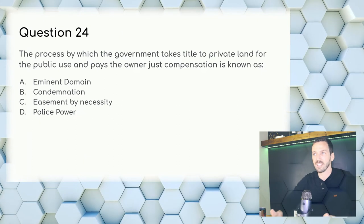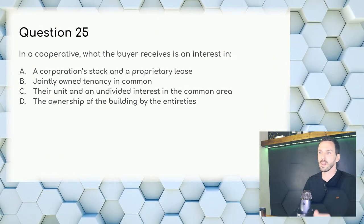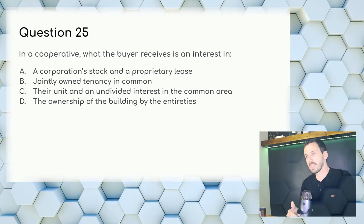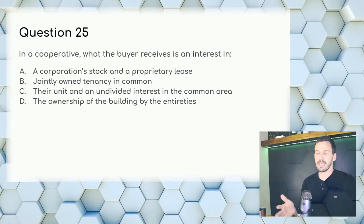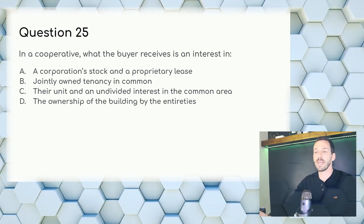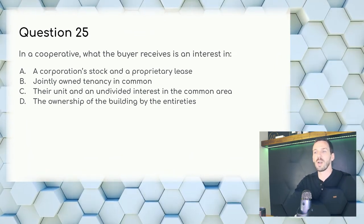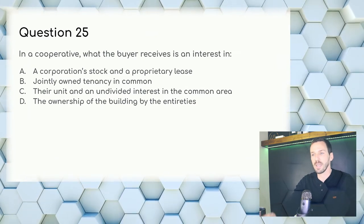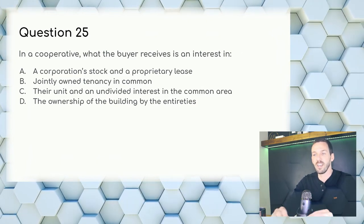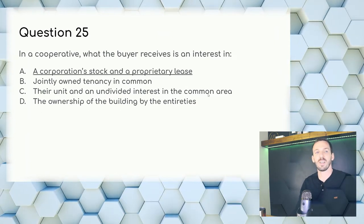Question 25: In a cooperative, what does the buyer receive? You don't actually own the place — you own a share of the place, which gives you a proprietary lease. Answer: A — a corporation stock and a proprietary lease.